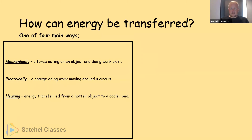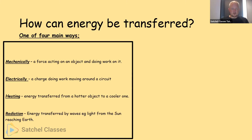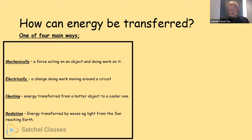By heating — heat energy can be transferred from a hotter object to a cooler one; for example, the sun's heat energy is transferred through space to Earth to make us warmer. By radiation — energy transferred by light waves, such as light from the sun reaching Earth.